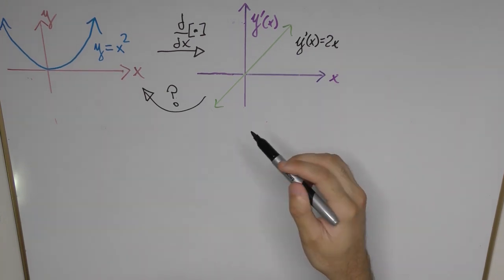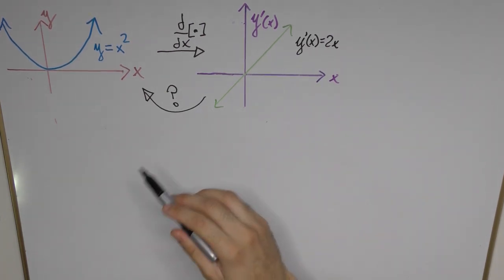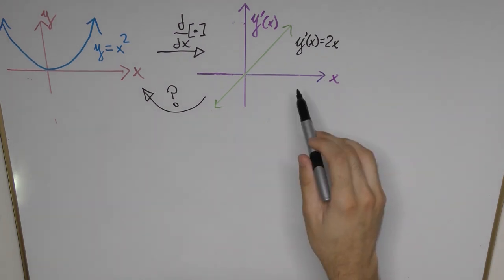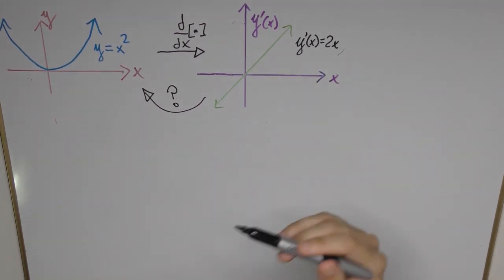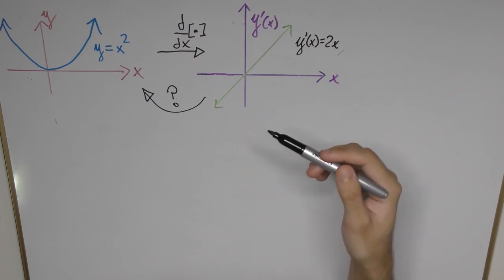So the question is how can we come back to the original function if we only had the derivative? So is there such a way to reverse this operation?